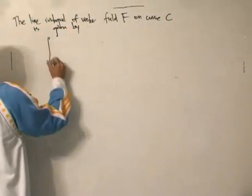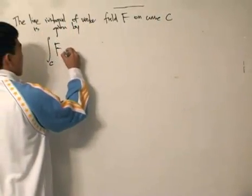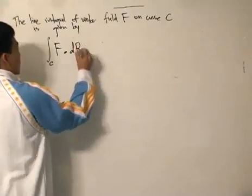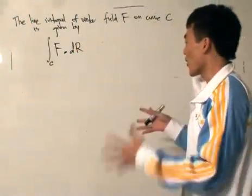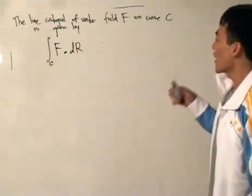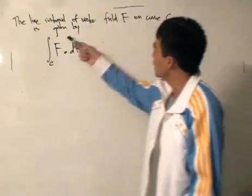Integrate like this: you've got the vector field F dot with dR. Now, very foreign symbols, but let's see what the whole thing means. The line integral of the vector field F on curve C is given by this.